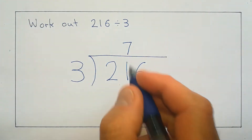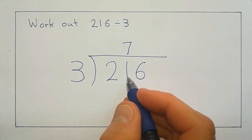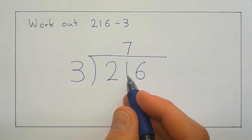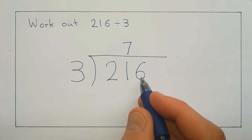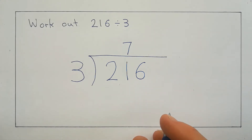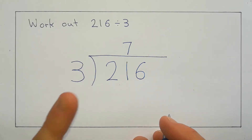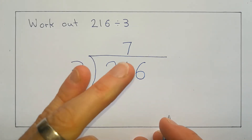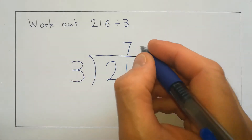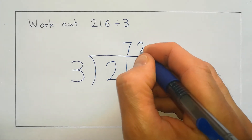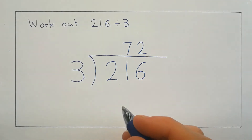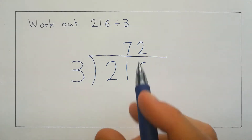So I'll write 7 over the 1, because that's the last digit we've used. Now we look at the 6 and say, how many times does 3 go into 6? 3, 6 — that's twice. So we've got our answer of 72.